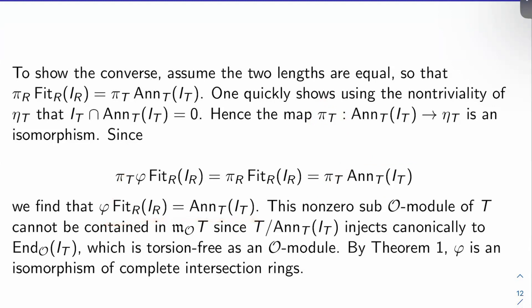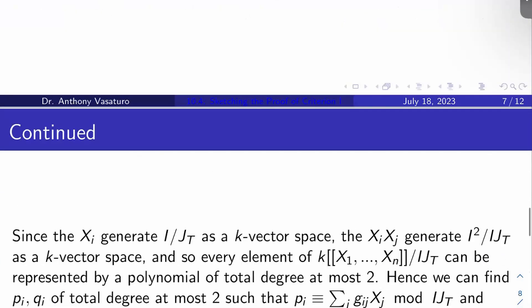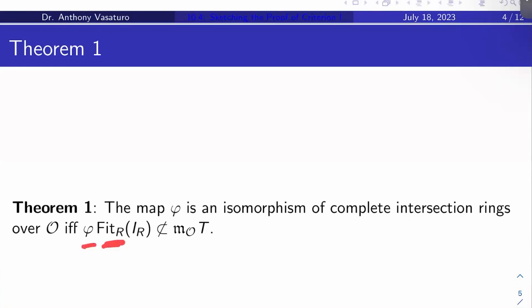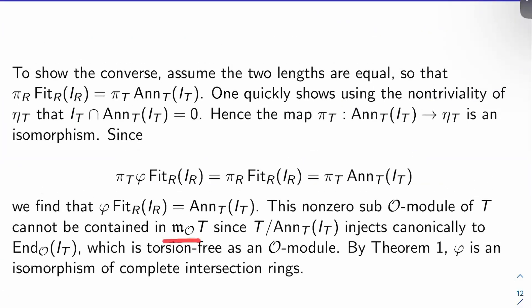Since phi of the R-Fitting ideal of I sub R equals the T-annihilator of I sub T, this is a nonzero sub-O-module of T. It can't be contained in M sub O times T because T mod the T-annihilator of I sub T injects canonically into the O-endomorphisms of I sub T, and that's torsion-free as an O-module. So this ideal is definitely not contained in M sub O times T. By Theorem 1, since phi of the R-Fitting ideal of I sub R is not contained in M sub O times T, phi must be an isomorphism of complete intersection rings.